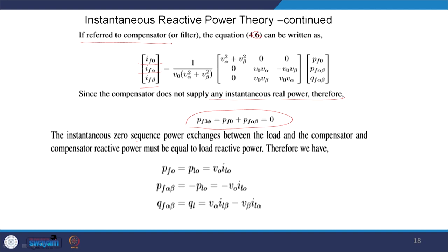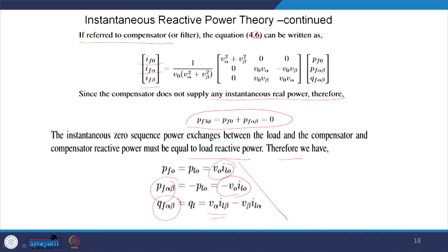The instantaneous zero-sequence power exchange between the load and the compensator, and the compensator reactive power, must equal the reactive power. Thus we have: PF0 = PL0 = V0·IL0; PFαβ = minus PL0 = minus V0·I0; and QFαβ = QL, that is the reactive power required to be compensated by the shunt active power filter, essentially Vαβ·ILα terms.